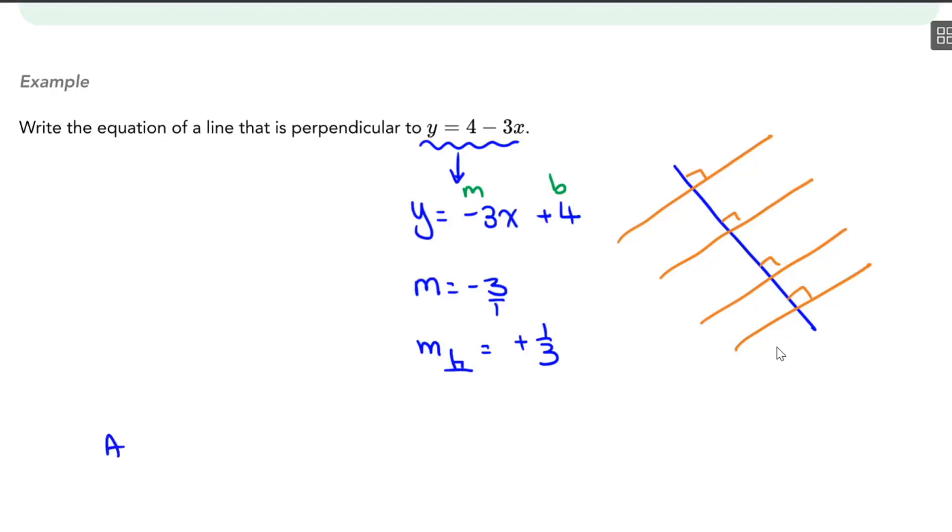So a line perpendicular to the given line is y = mx + b, which is the slope 1/3x, plus you can pick whatever number you want here. So I'm going to put a smiley face. Pick your favorite number, put it in. That is a line that is perpendicular to y = 4 - 3x.